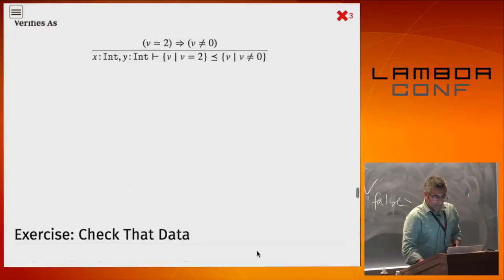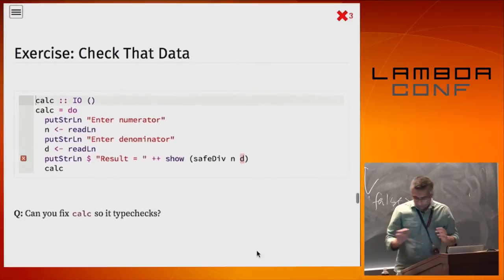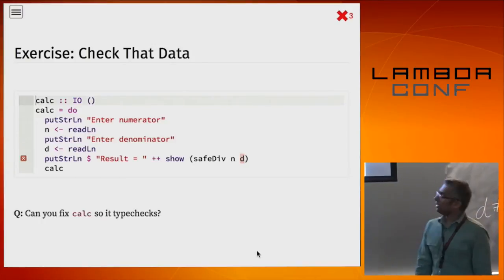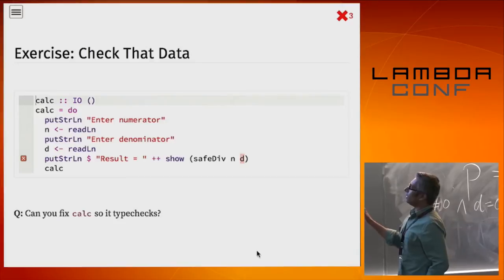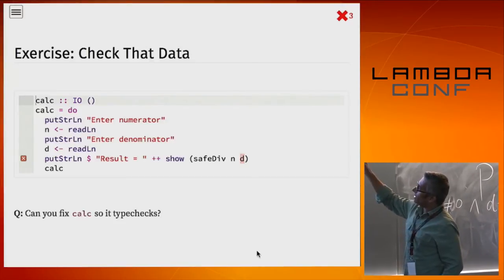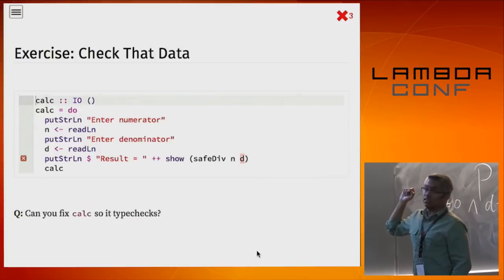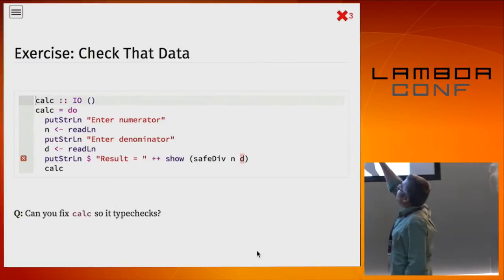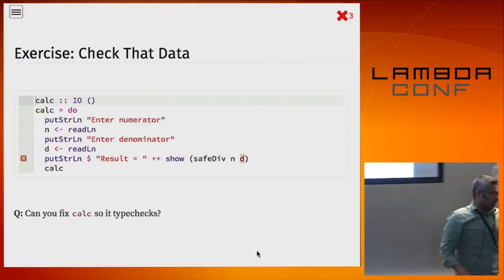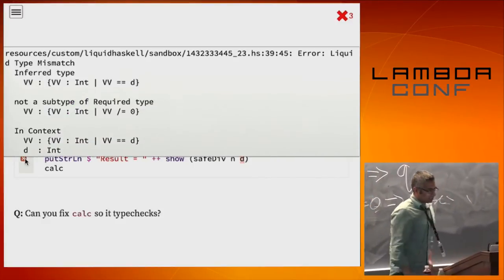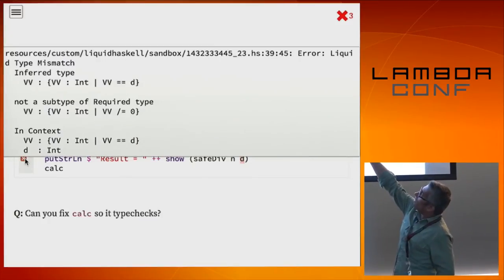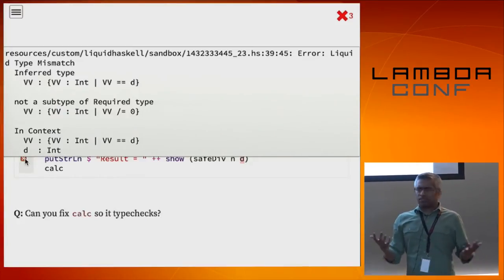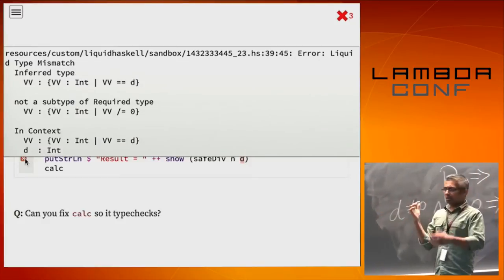Here's a quick exercise: where do you get these values from? In the real world, numbers come in from the user. Here's a little program that asks the user to enter a numerator n and a denominator d. n and d are arbitrary numbers. Then it calls safe_div n d — and the thing is not happy. The error message says: the only thing I know about d is it's of type Int with refinement 'value = d', and I need it to be 'value /= 0'. There's no reason to think d is not equal to zero — I can't prove the implication holds.